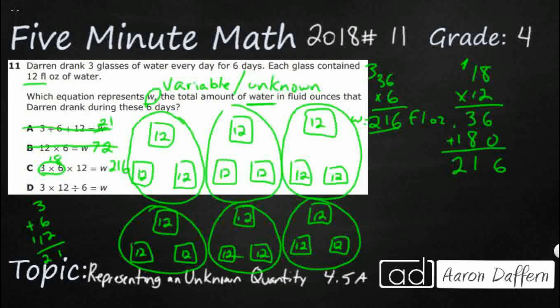Let's check our last one. 3 times 12 divided by 6. So 3 times 12, that's 36. 36 divided by 6 is going to get you down to 6. So they just used the wrong operation. Our answer here is C.